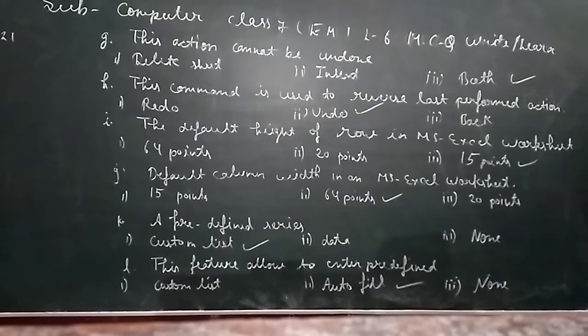The defined height of row, how much can it be? 15 points. And the default column width in MS Excel worksheet, where you can choose your chosen point. You can know that MS Excel worksheet is created in rows and columns.